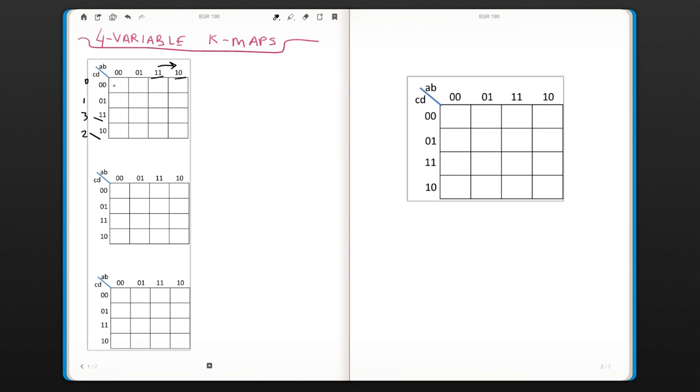Same as here. So if you put all the minterm numbers here, it's going to be: this is 0, because 0, 0, 0, 0. Then 1, this is 3, 2. And then this is 4, 5, 7, 6.